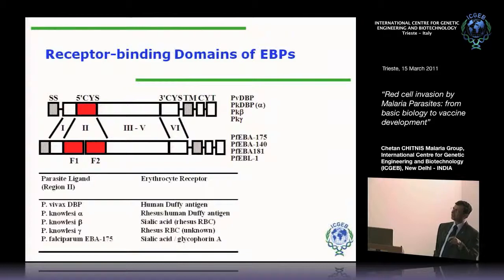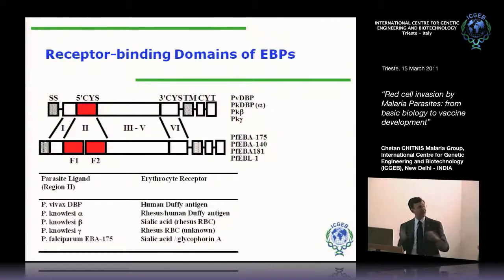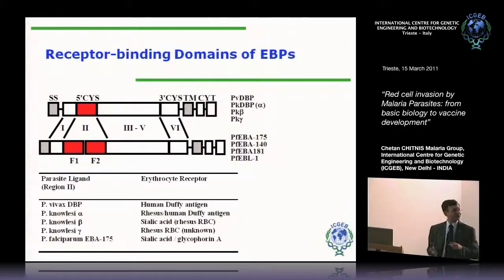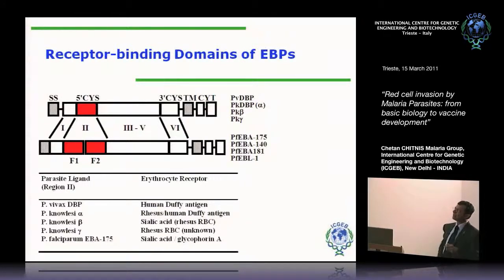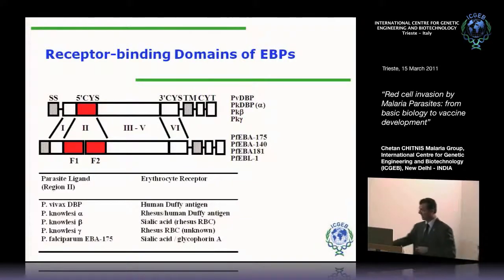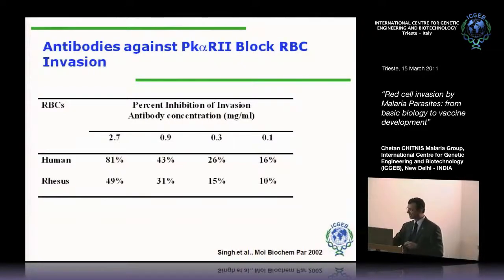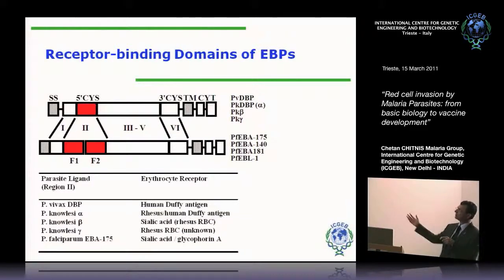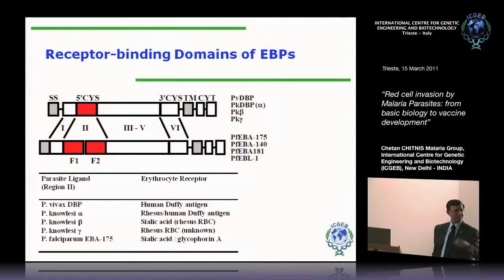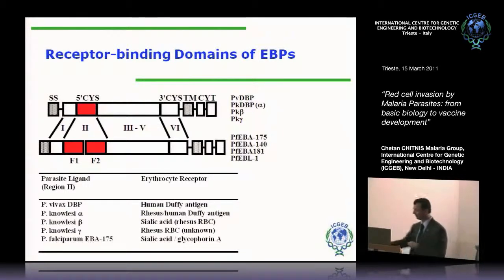These domains are about 40 kilodaltons in size, with multiple cysteines conserved in position, defining a particular motif of cysteine residues. These are what a lot of our work has focused on — understanding how they interact with their receptors and whether antibodies to these will block invasion. We went to the Nolzi system, produced Nolzi alpha region 2, raised antibodies and tested whether these could block invasion in vitro, and antibodies to region 2 of the Duffy binding protein block invasion of Nolzi into both human as well as rhesus red blood cells, proving the concept of this vaccine at least in vitro.